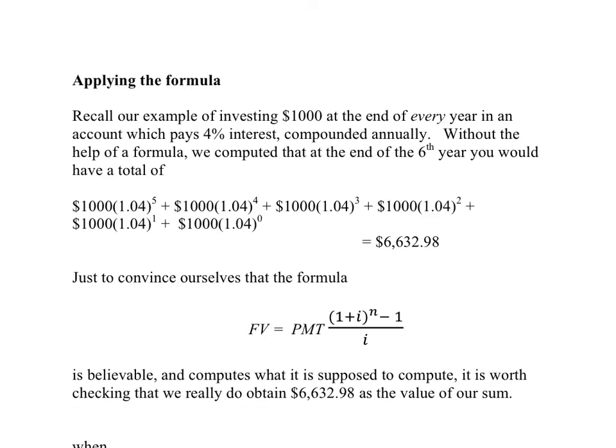Our first application of the formula will be to convince ourselves that it actually works. We're going to apply it to an example where we already computed the answer the long way. So recall this example of investing $1,000 at the end of every year into an account paying 4% annual interest. This is still just compounded annually. And without the help of a formula, we computed it the long way to be $6,632.98.